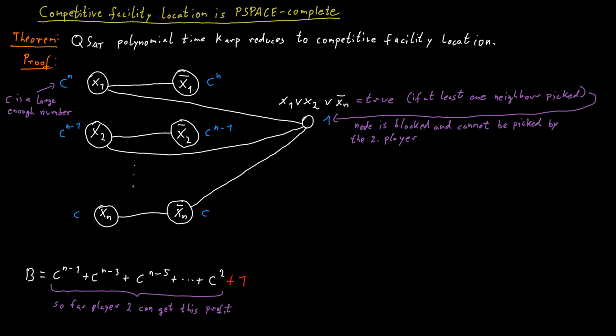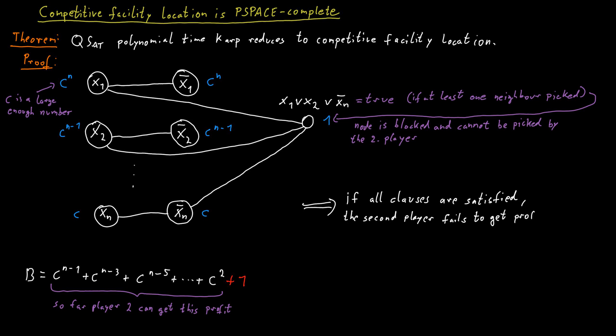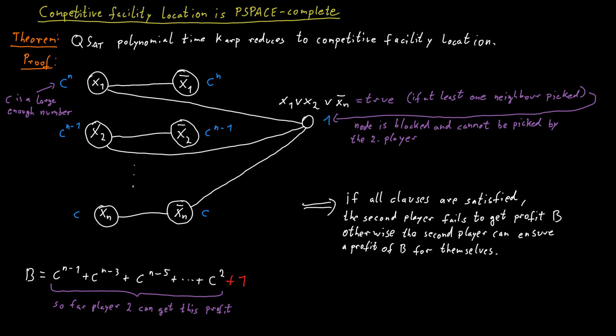That is the entire construction. We add one additional node per clause and connect it to the relevant variable nodes. The construction is simple and can be done in polynomial time. It satisfies the requirement that player 2 can win the game if and only if the quantified Boolean formula is false — equivalently, the first player wins if and only if the quantified Boolean formula is true, which is exactly the property we needed.